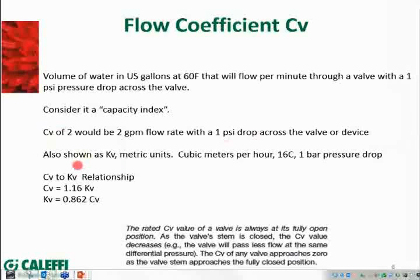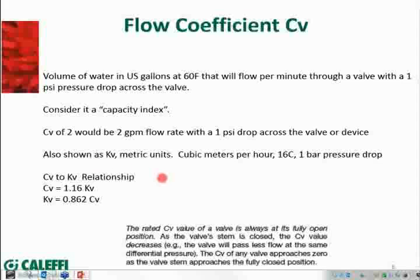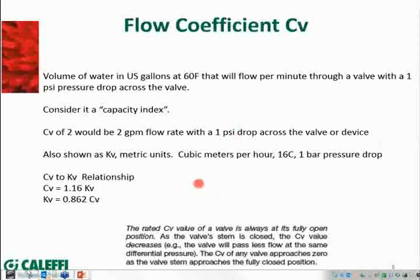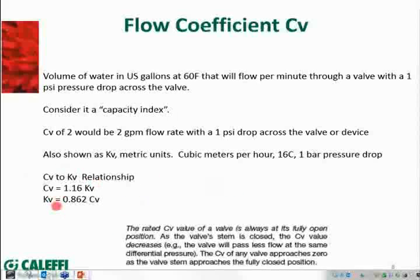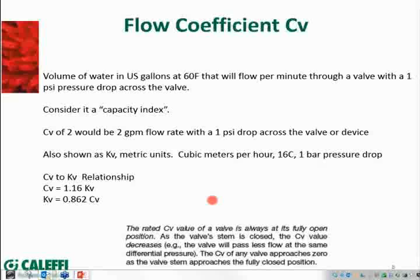You'll also see this expressed sometimes in metric units, especially with Klaffi components since we sell worldwide and most of the rest of the world works in metric. You'll see this expressed as KV — K sub V — which would be cubic meters per hour at a temperature of 16°C with a one bar pressure drop. Instead of using the English terms of GPM and PSI, we've put that in metric terms, and there are numbers to convert back and forth. What we try to do on all our products when we show data sheets is show both CV and KV, which makes it usable anywhere in the world.